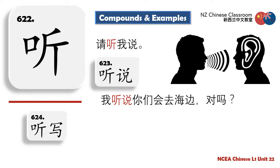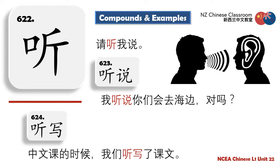听写 — first 听 then 写, this means dictation. Dictation is where you listen to the teacher say something and write down word for word what they're saying. Example: 中文课的时候，我们听写了课文 — In Chinese class, we dictated the text.